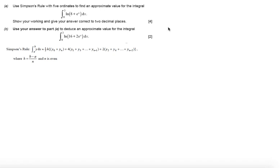Use Simpson's rule with five ordinates to find an approximate value for the integral 0 to 3 of log(8 plus e to the x) dx. Show the working and give your answers correct to two decimal places.